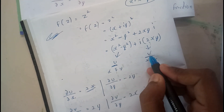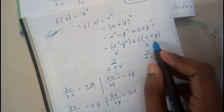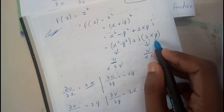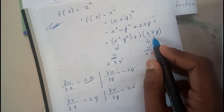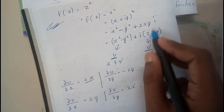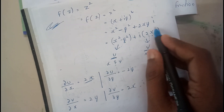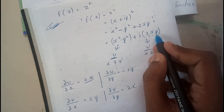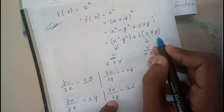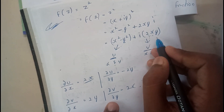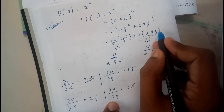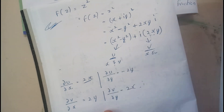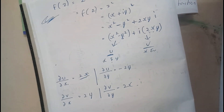For v = 2xy: differentiating with respect to x gives 2y. Differentiating with respect to y gives 2x.